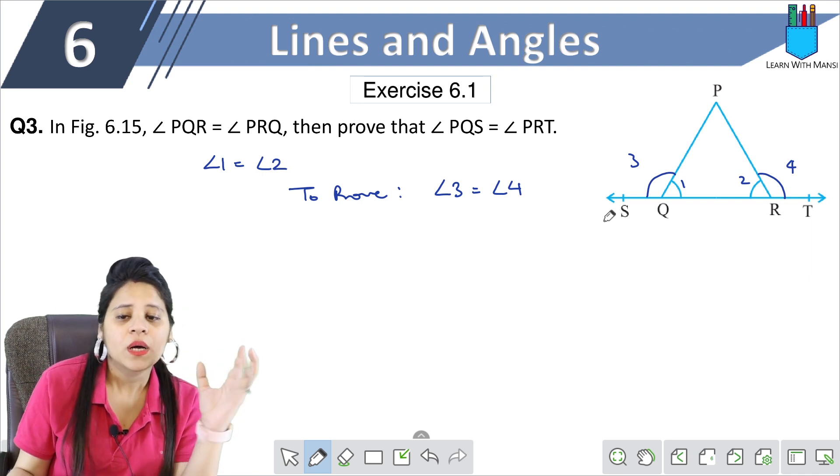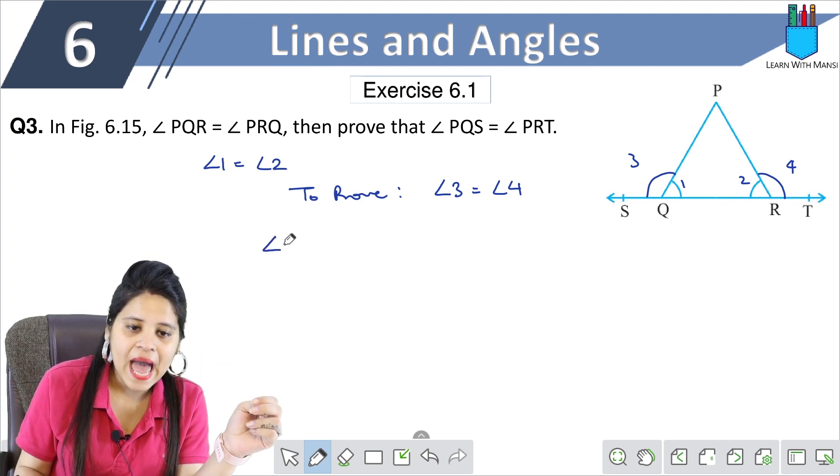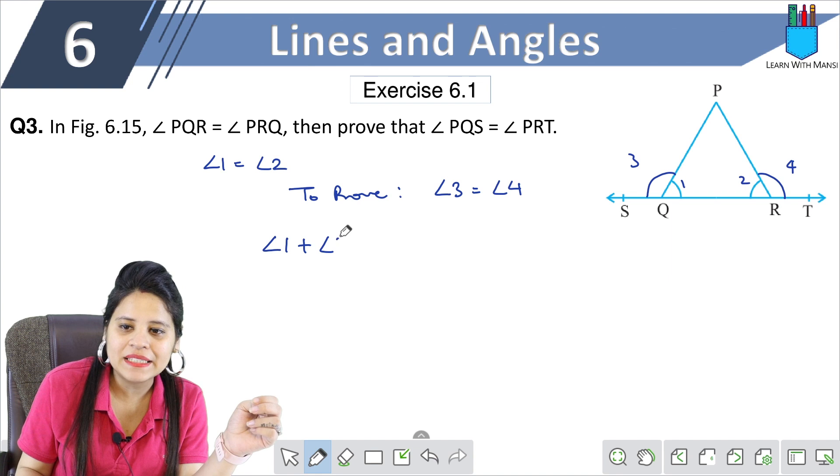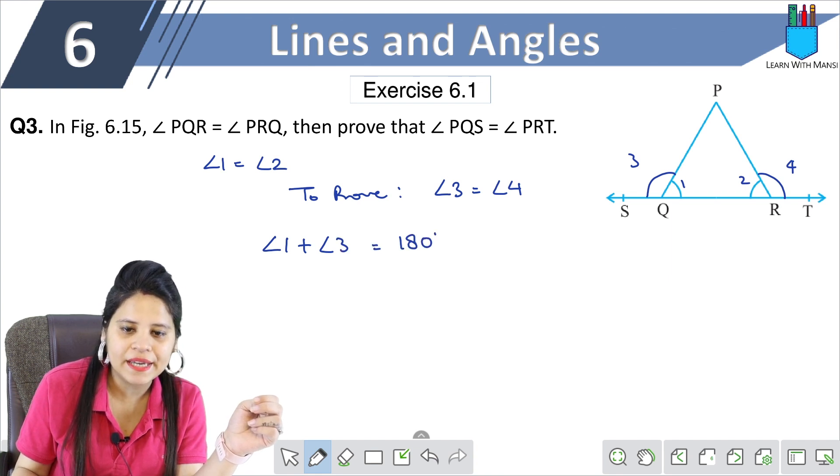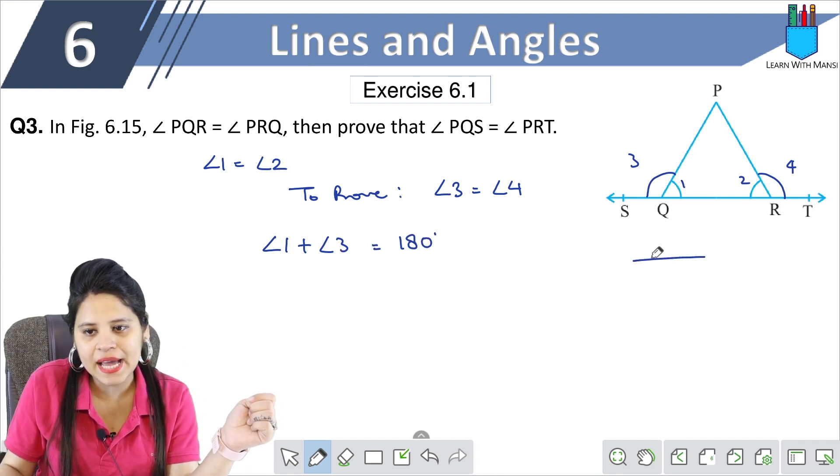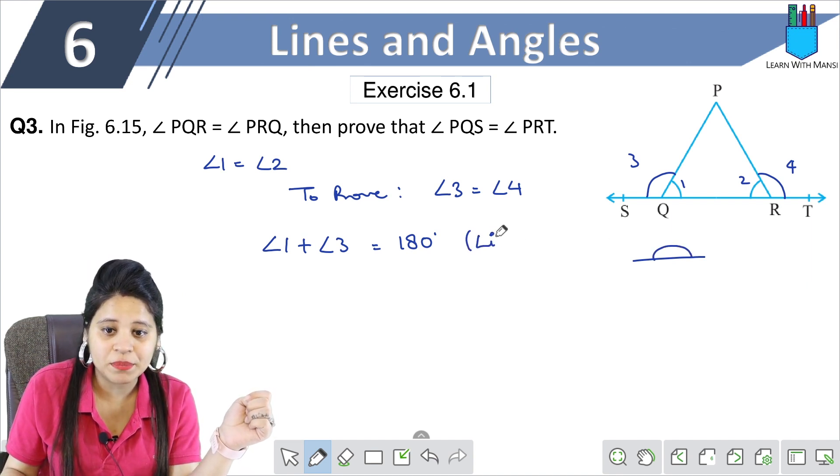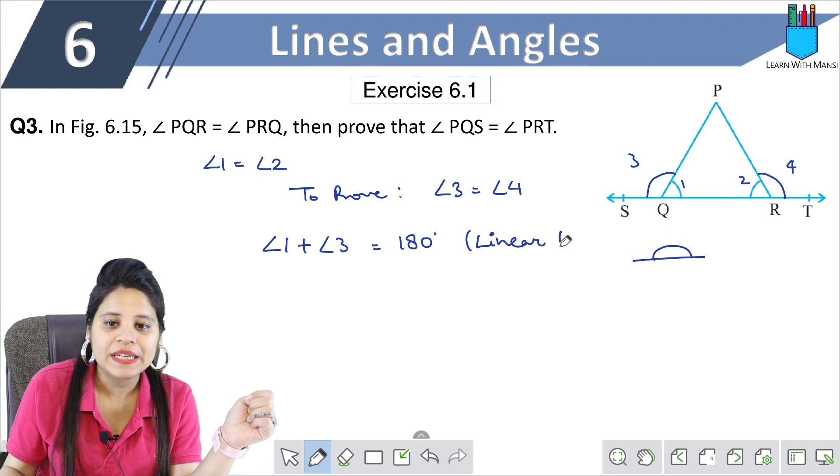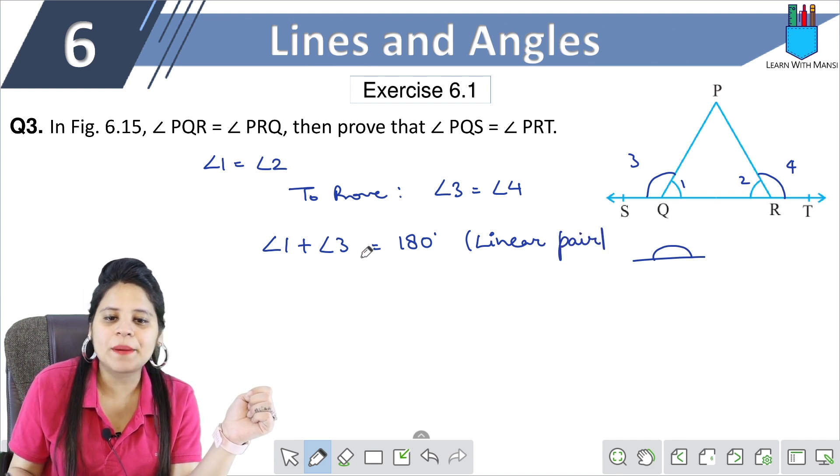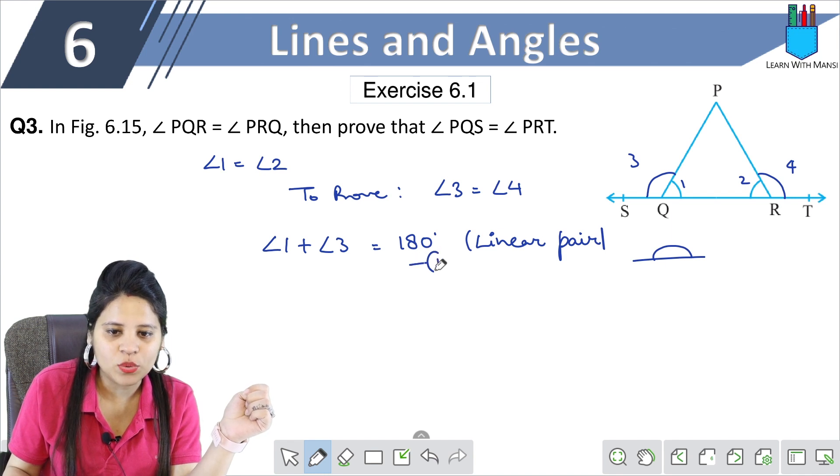So now here, a very simple question. Angle 1 plus angle 3 is equal to 180 degrees. Am I right? What is this angle? It is making a whole linear pair. So we will also mention it because of linear pair. Okay? So yeah, it has come to us and I will name it first.